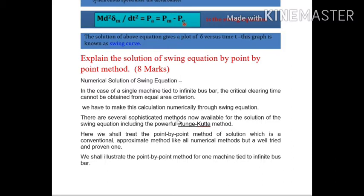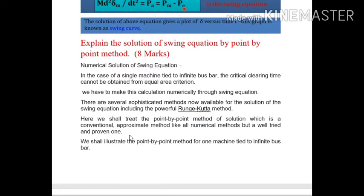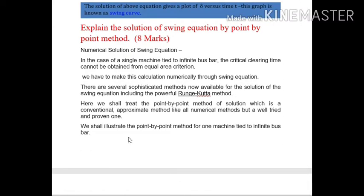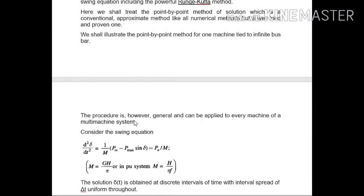Several sophisticated methods are available for the solution of the swing equation, such as the Runge-Kutta method. Here we shall treat the point-by-point method of solution, which is a conventional approximate method — like all numerical methods — but a well-tried and proven one. This is also known as the step-by-step method. The procedure is general and can be applied to every machine in a multi-machine system.